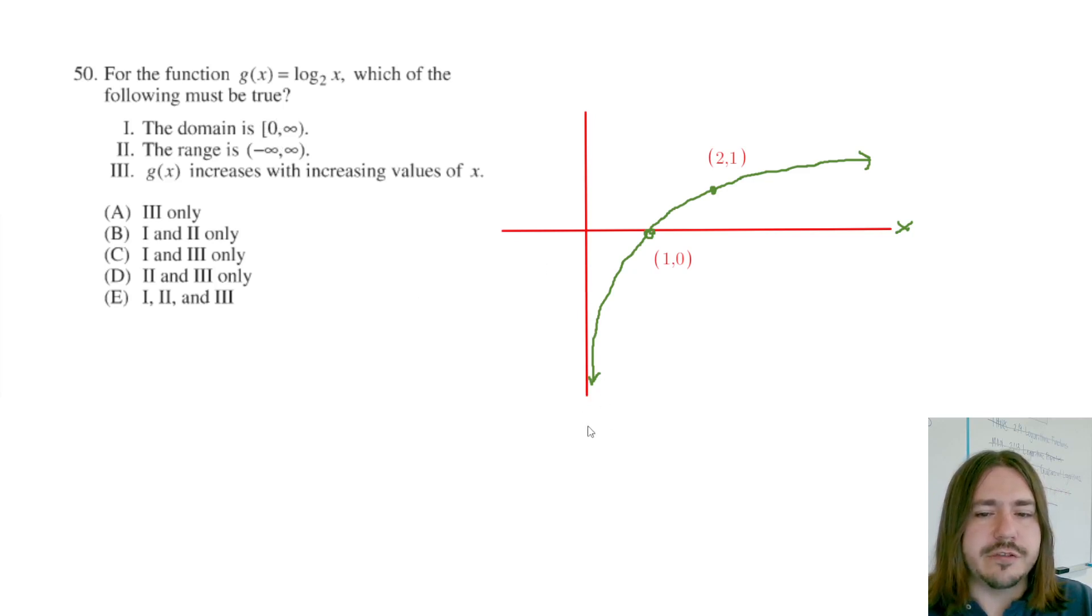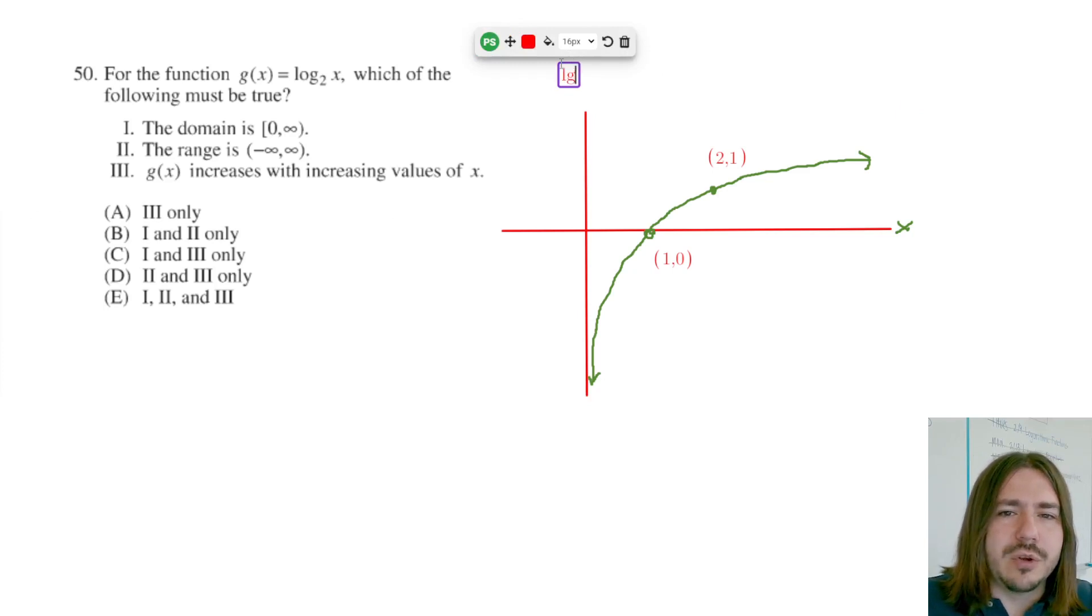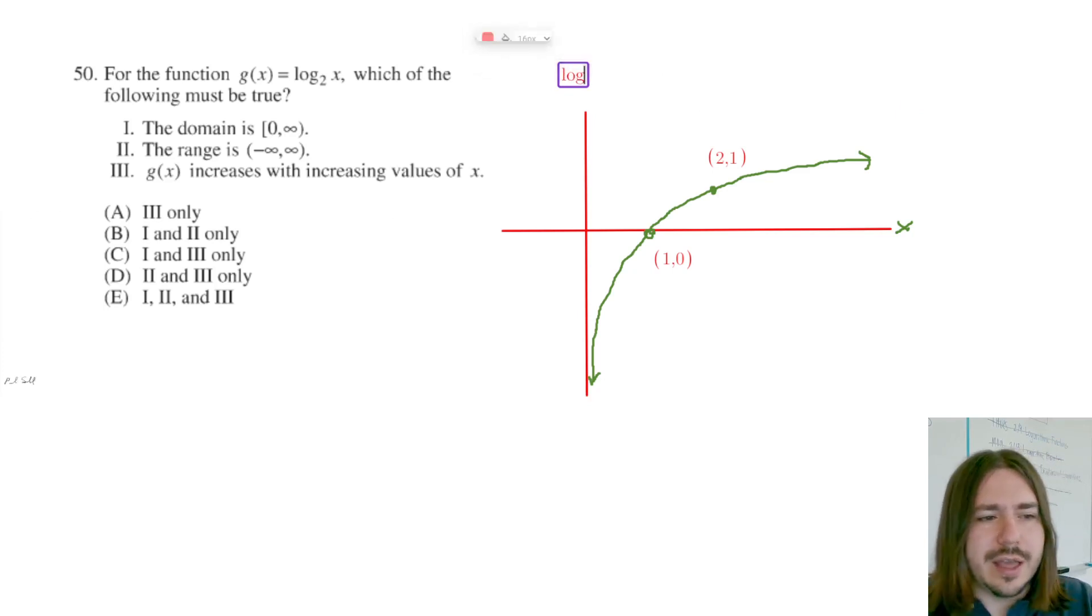This little bracket here indicates that we want to include that number in the set. But as you can see from this graph, we've got this vertical asymptote here. And 0 is not going to be a valid input into this function.